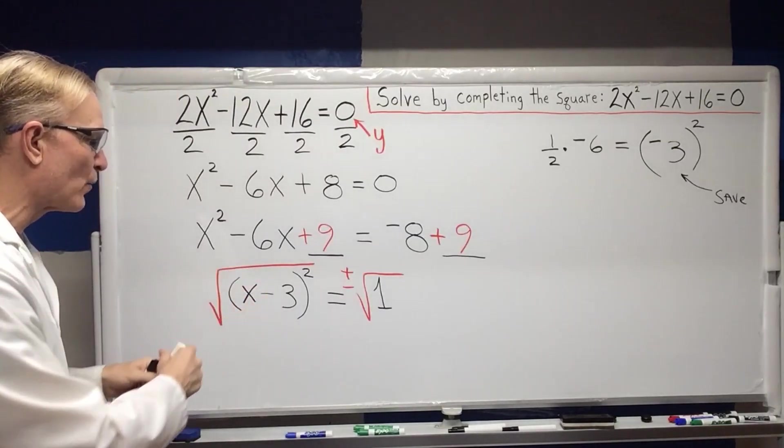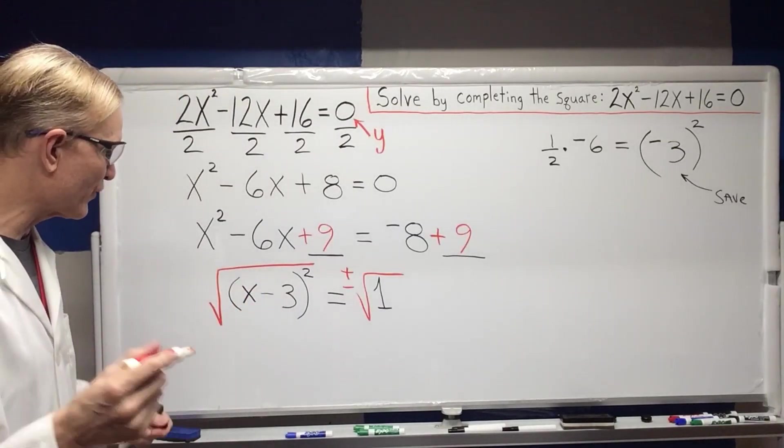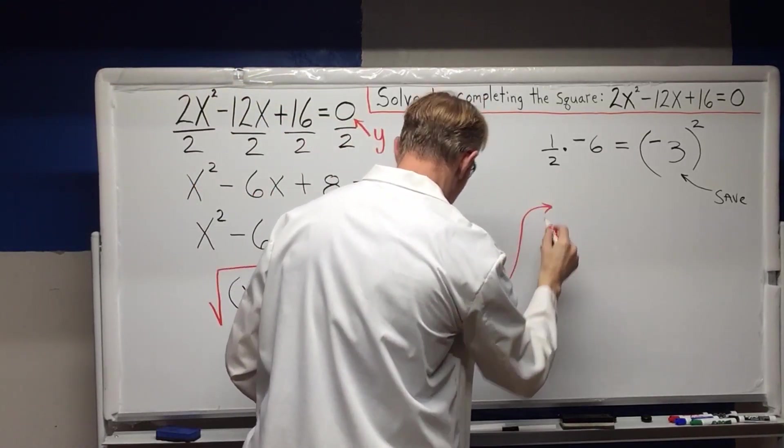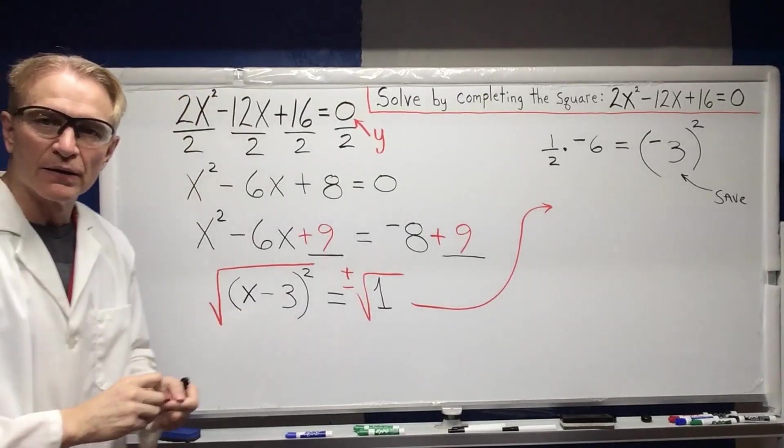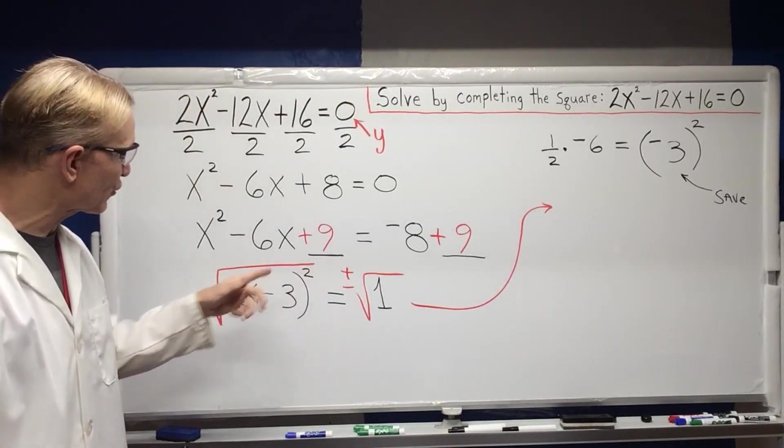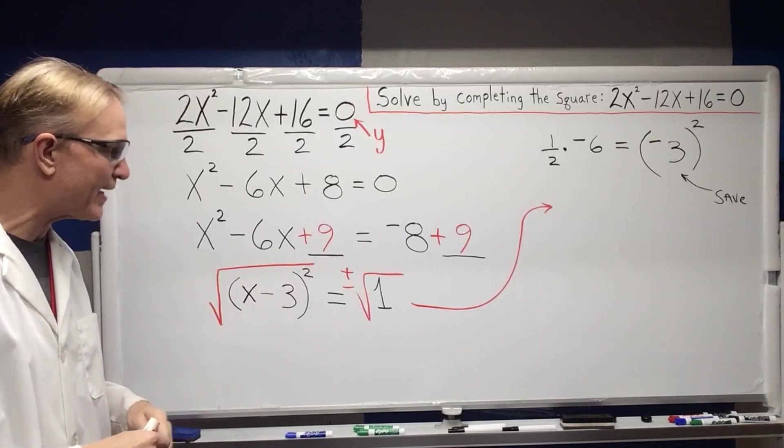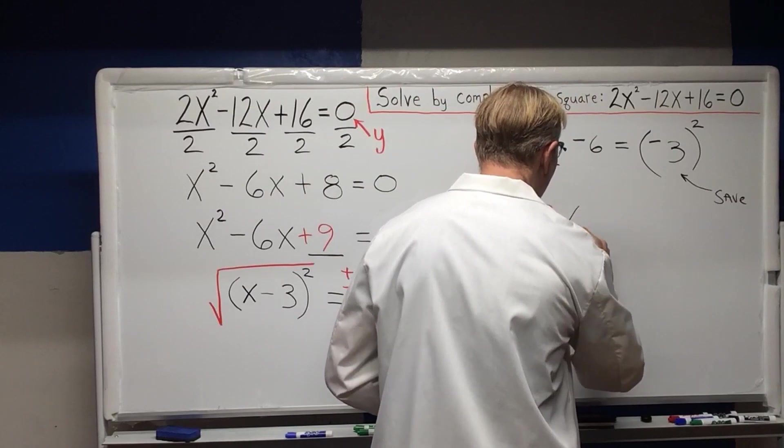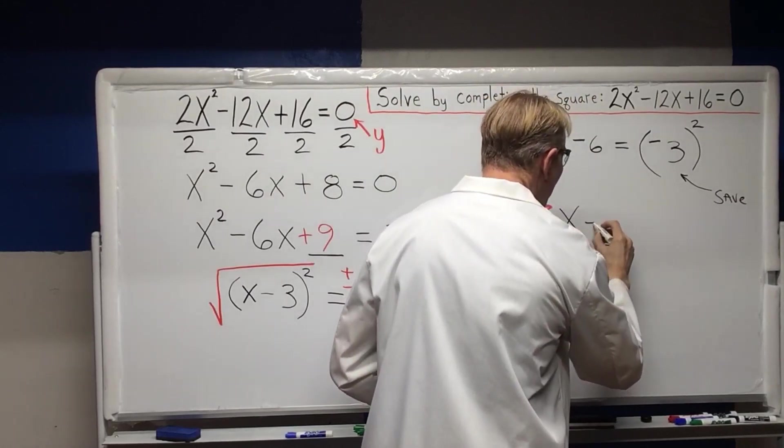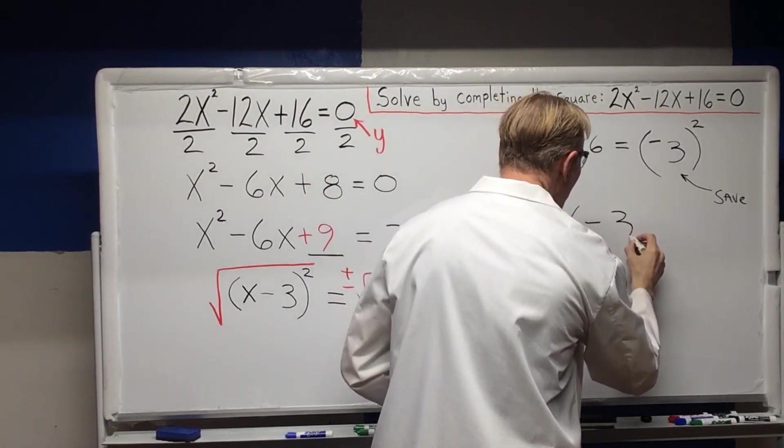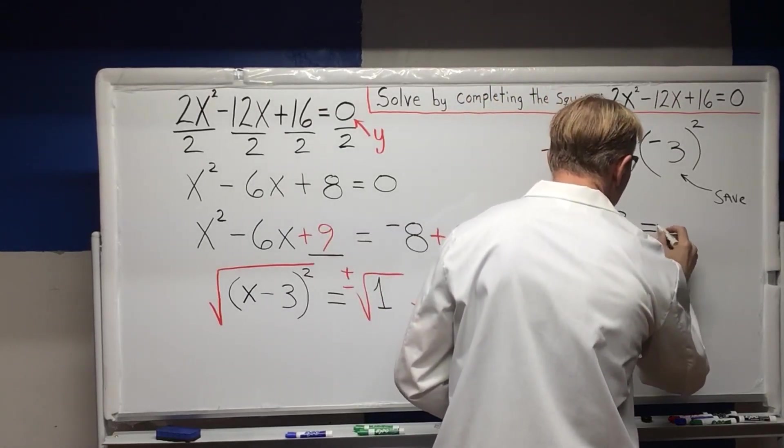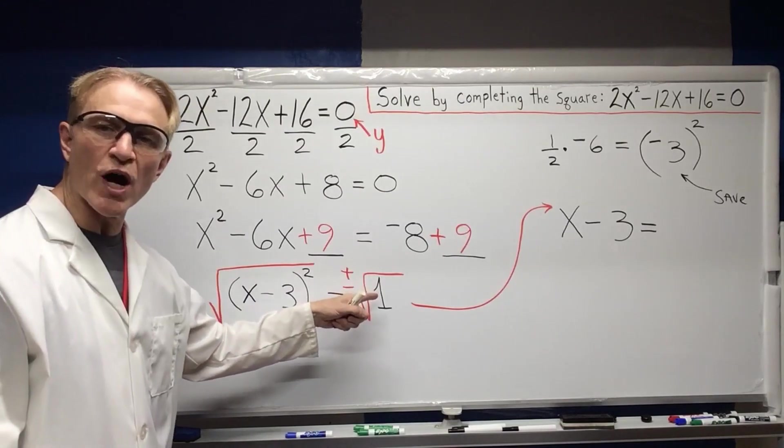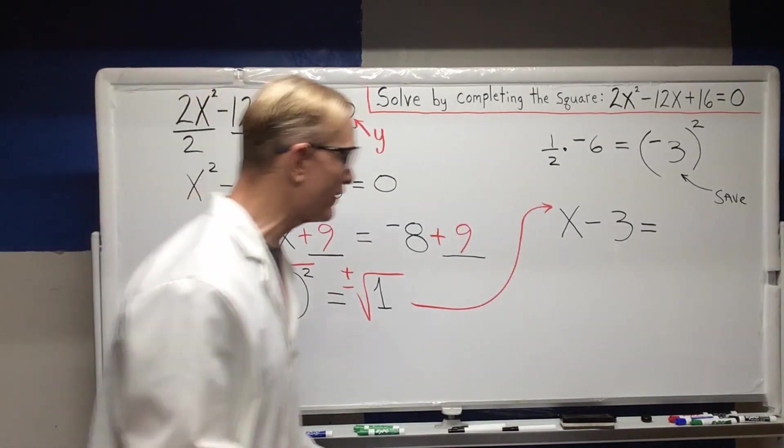Okay, next step. We're going to push our argument over to the right here. So we look at this and we say, what is the square root of a square? It's just going to be what's inside, which is going to be X minus 3, equals, and then the square root of 1 is just 1 with a plus or minus in front of it.